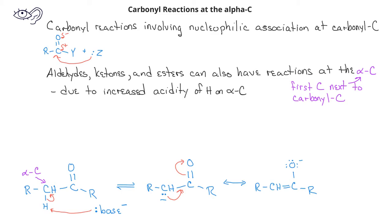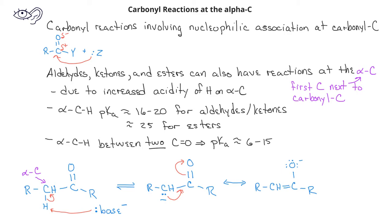...we see that for aldehydes and ketones, the pKa will be between 16 and 20. However, if the alpha carbon is between two carbonyl groups, then it will be more acidic with a pKa of between 6 and 15.